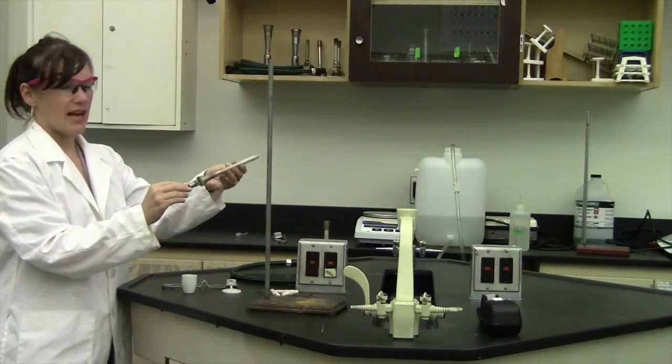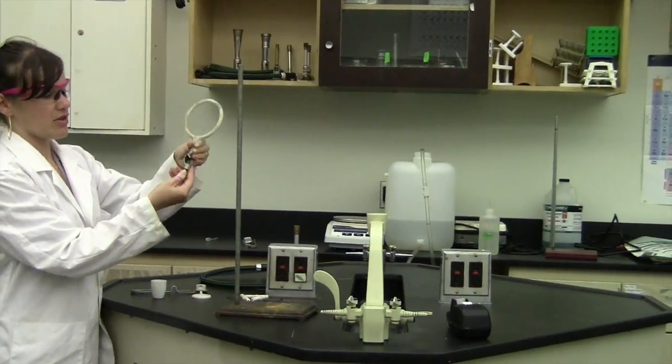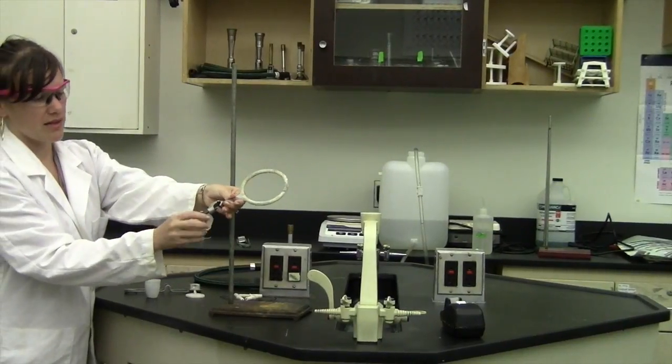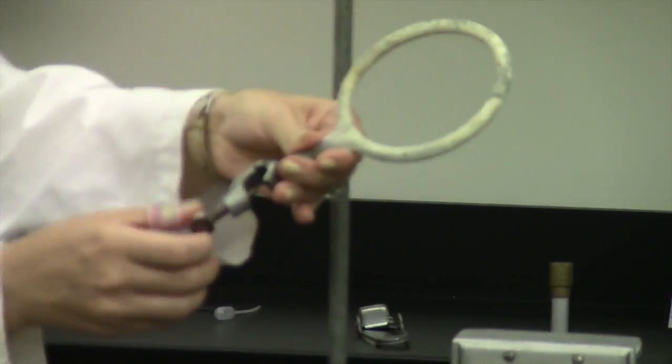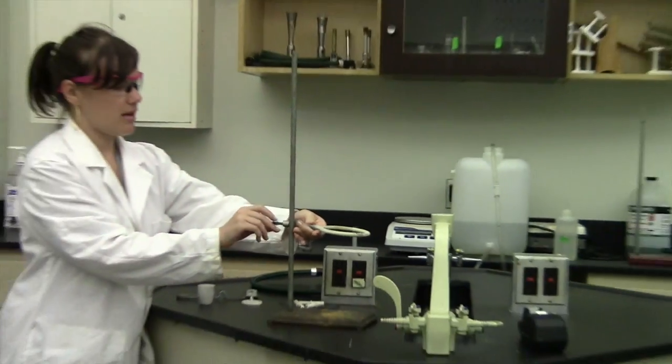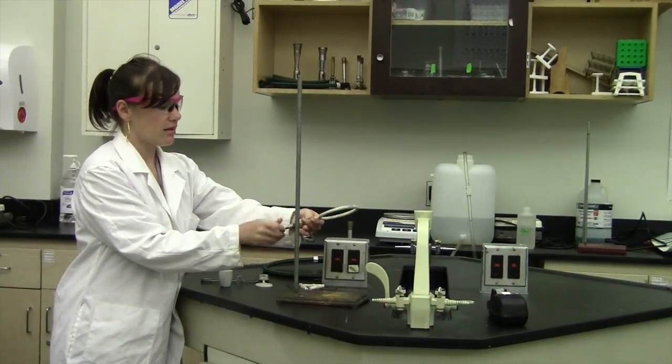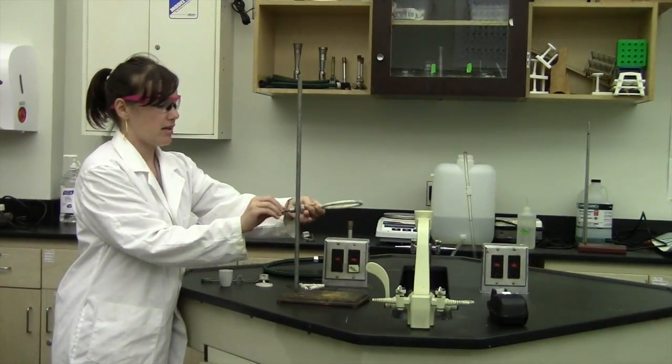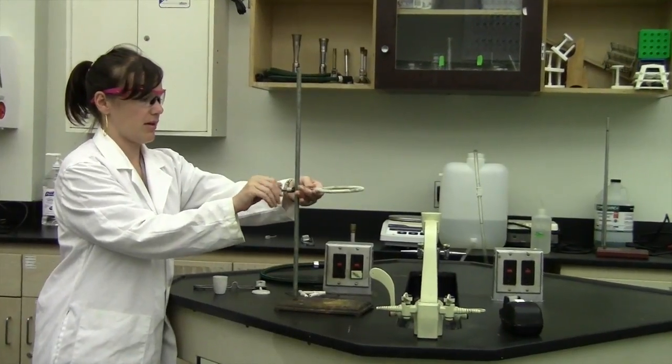So we're going to attach the ring. You'll just unscrew this part of the clamp, lefty-loosey, and then it's going to go in and you'll tighten it righty tighty. I'll put it above here.